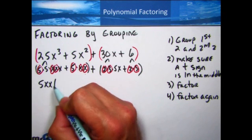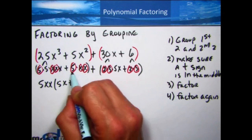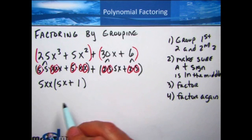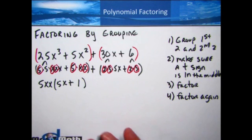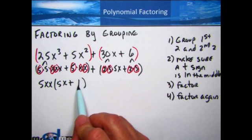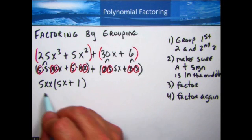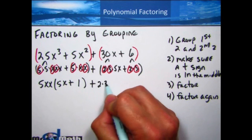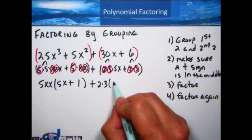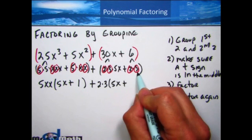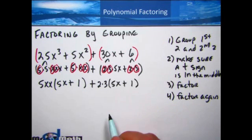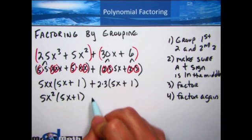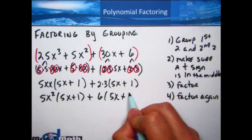What the first set of parentheses has in common is 5, x, and x — so 5x² comes out, and what's left over is 5x plus 1. Remember: factoring is dividing, and if it divides completely into itself it goes in one time, leaving a 1. For the second set, the 2 and 3 are in common — that's 6 — and what's left over is 5x plus 1. So we have 5x² times (5x + 1) plus 6 times (5x + 1).